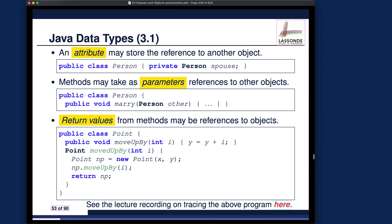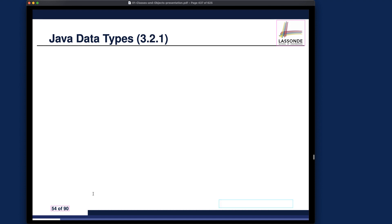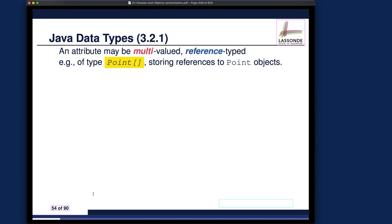Up to now you should have studied up to and including slide 53. Starting from slide 54 we will talk about multi-value reference type attributes. Specifically we're using the square bracket notation for primitive arrays. We want to build everything from scratch, starting from the creation of an array of some fixed size, then filling in the slots one by one.